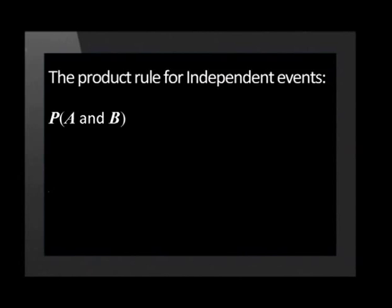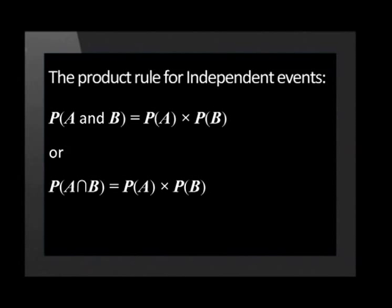In general, if two events A and B are independent, then the probability of A and B is equal to the probability of A multiplied by the probability of B. Alternatively, we can say that the probability of A intersection B is equal to the probability of A multiplied by the probability of B. This rule can be extended to any number of events.